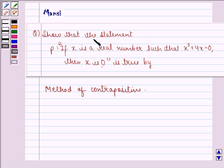The question says show that the statement P that says if X is a real number such that X³ plus 4X equals 0, then X is 0, is true by method of contrapositive.